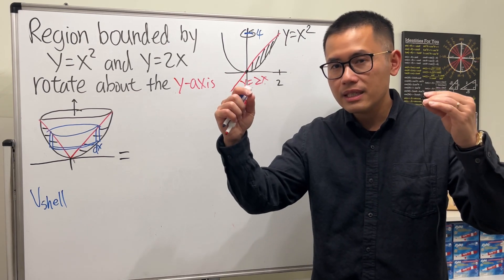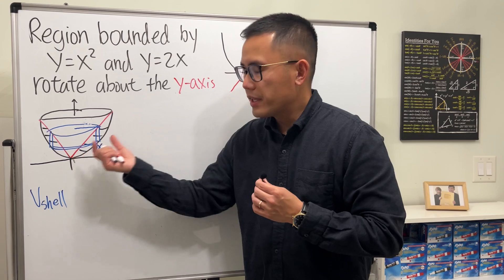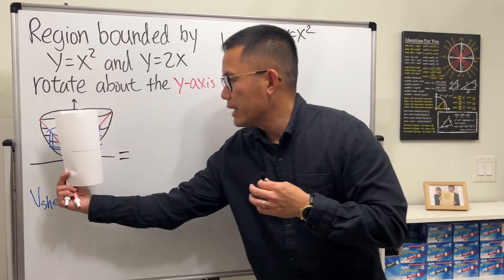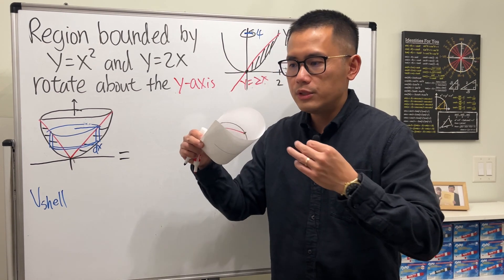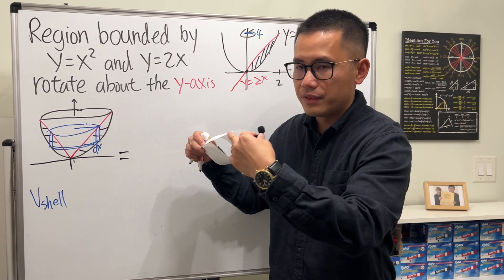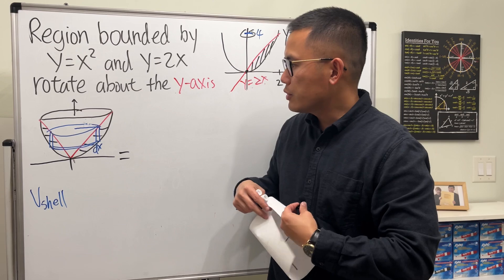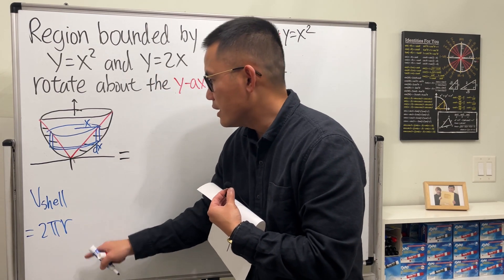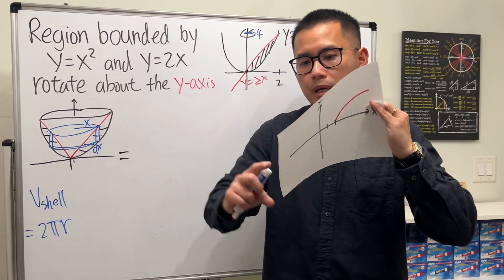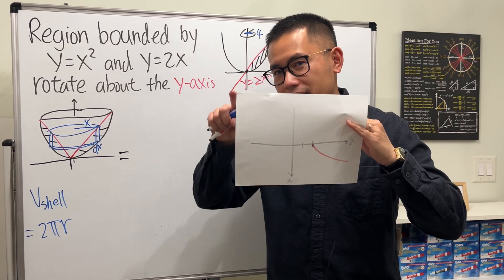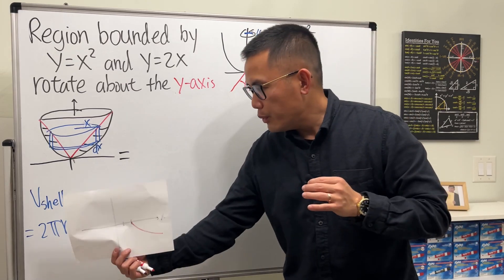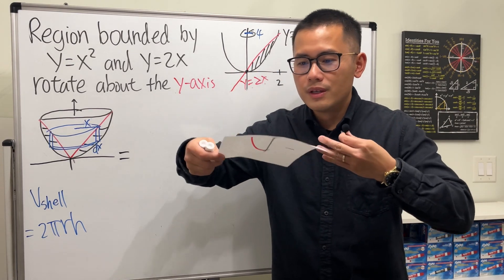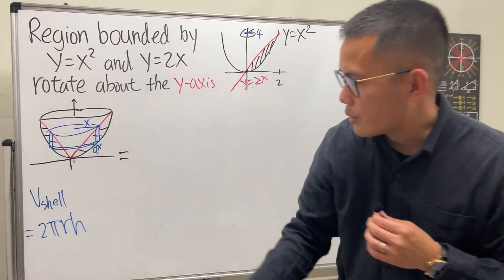Each shell is like a rectangle with length, height, and thickness. Imagine a roll of toilet paper with the paper unrolled — it's a circle, so we need the circumference. In our picture, the radius is just x, the horizontal distance. The circumference is 2 pi times the radius x. Then we multiply by the height h, giving the area of the shell's surface. To get volume, we multiply by the thickness.